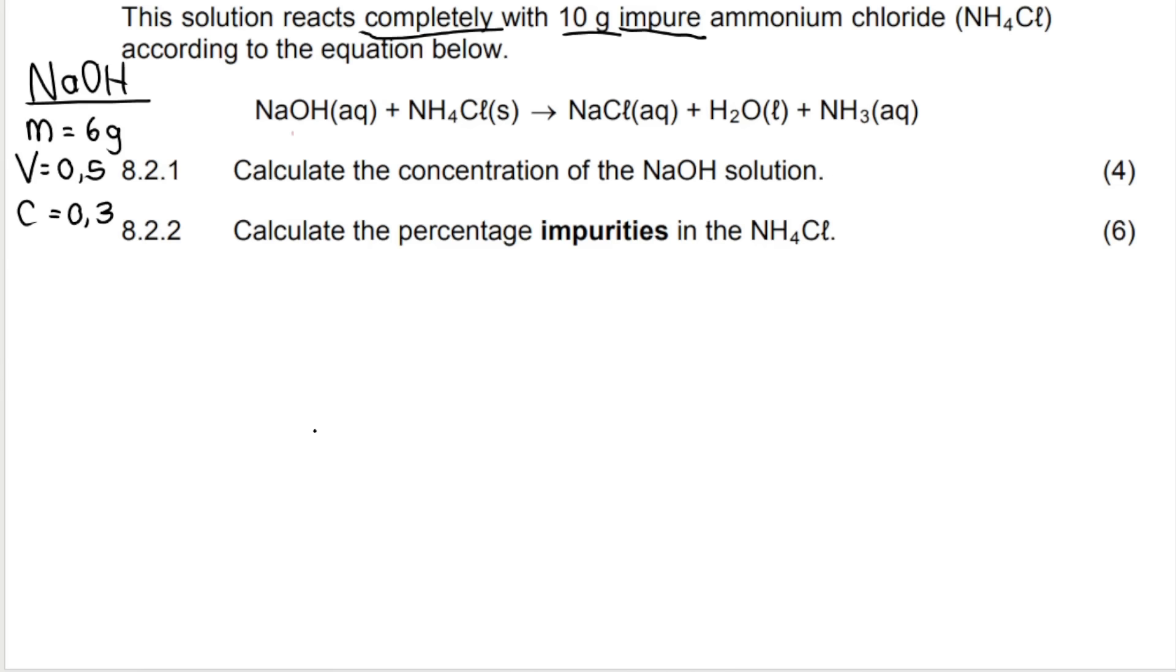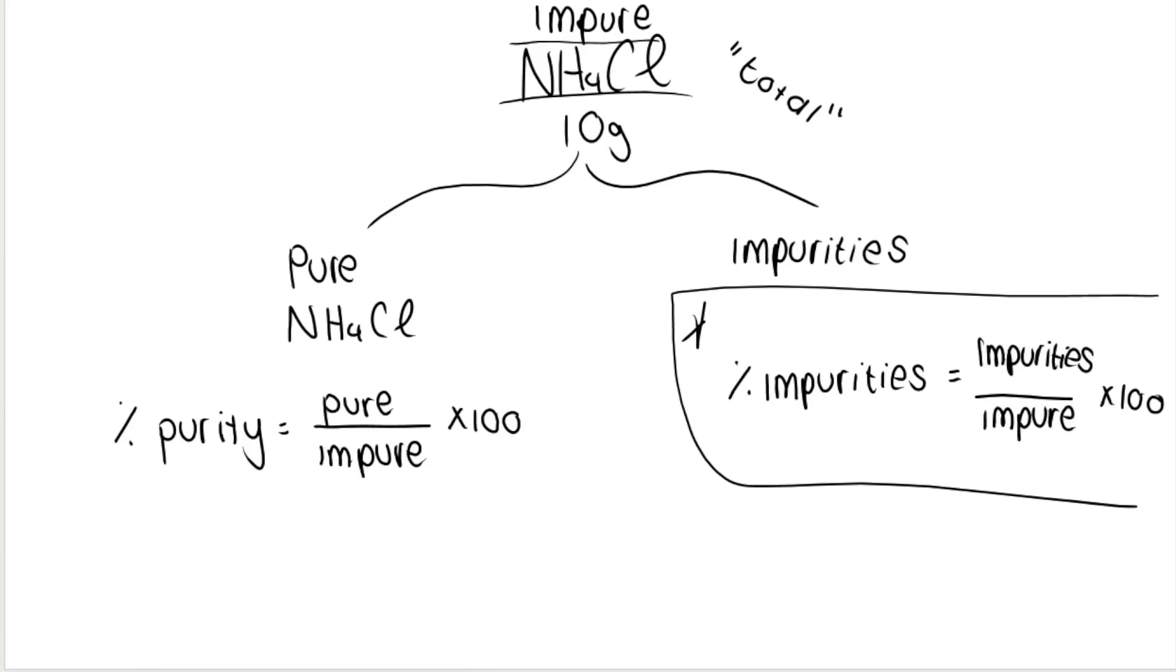So in this question, I want the percentage impurities. And I hope, again, that it makes sense that my impure is my total. What makes up the impure is a little bit of pure stuff. The rest is impurities. So if I add these two things together, it gives me my impure. I have a whole video on this if you want to go check it out. But let's carry on with the question. So my goal in these questions is to find out the pure amount. If I can find out the pure amount, then I will be able to find out how much impurities I have.